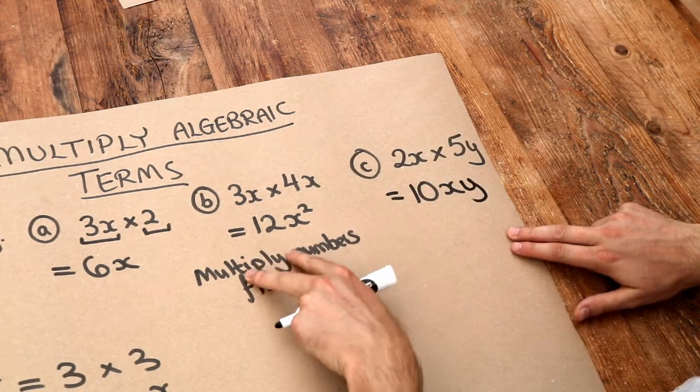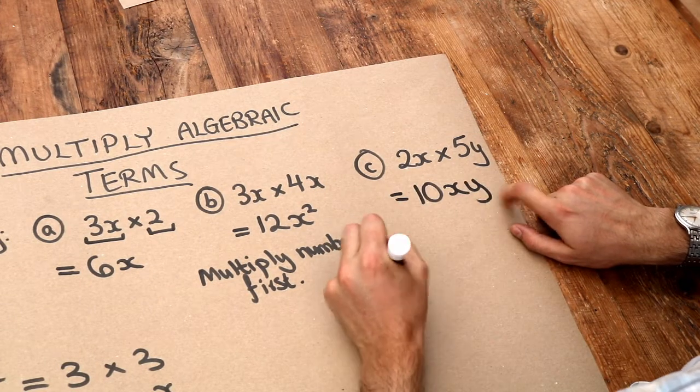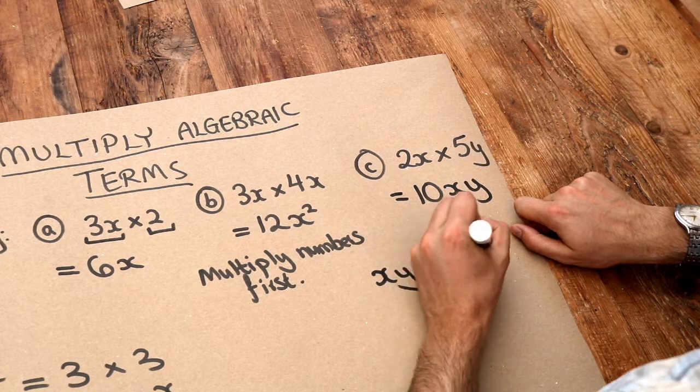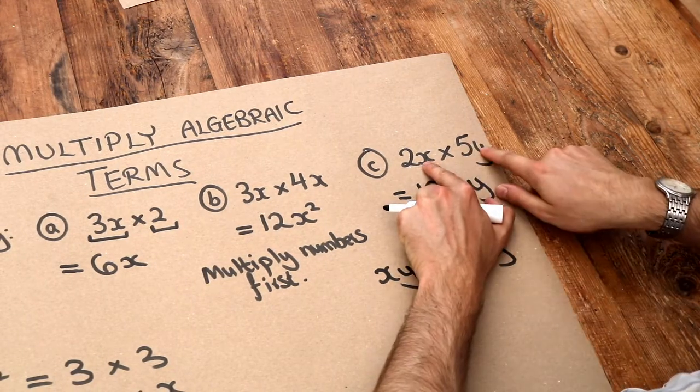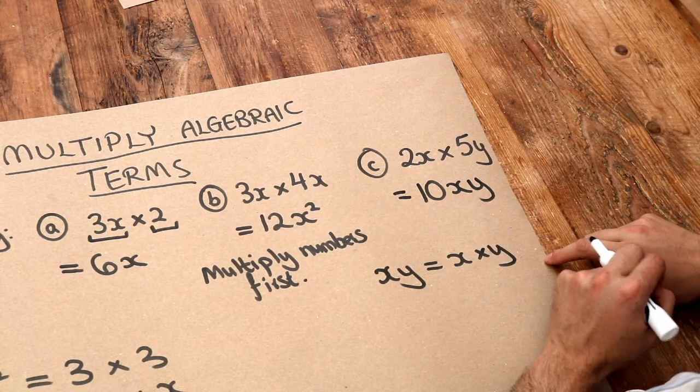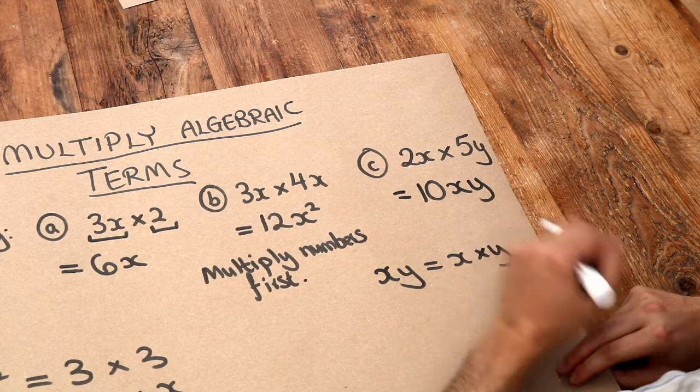And remember in algebra, when you have two things next to each other, that just means that you're multiplying them together. So xy means x times y. And indeed, that's what we've got. We've got x times the y, and that gives you xy. But we prefer not to use the times symbol in algebra where possible.